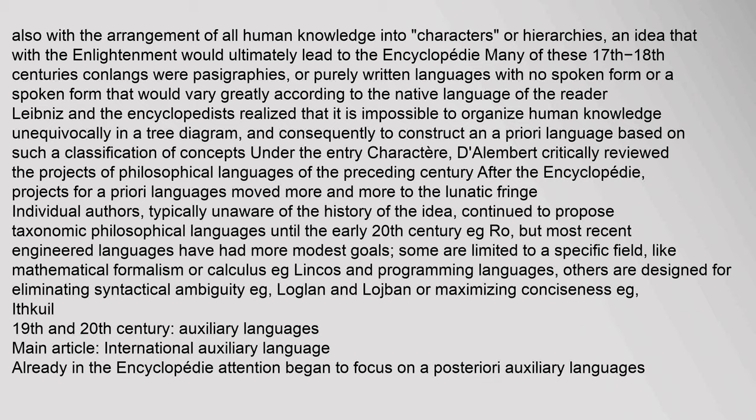Many of these 17th–18th century conlangs were passigraphies, or purely written languages with no spoken form. Leibniz and the Encyclopedists realized it is impossible to organize human knowledge unequivocally in a tree diagram, and consequently to construct an a priori language based on such a classification. After the Encyclopédie, projects for a priori languages moved more and more to the lunatic fringe. Most recent engineered languages have had more modest goals — some limited to mathematical formalism, others designed to eliminate syntactical ambiguity, such as Loglan and Lojban, or maximize conciseness, such as Ithkuil.